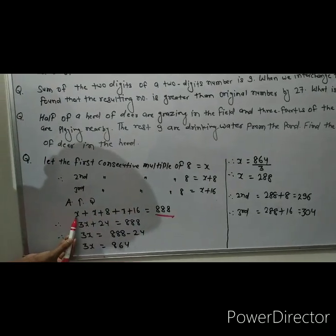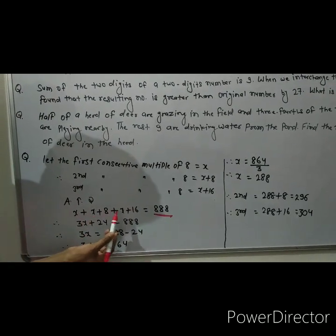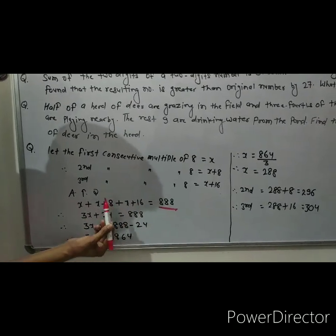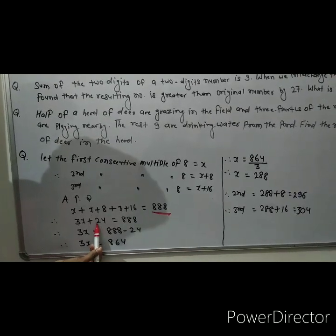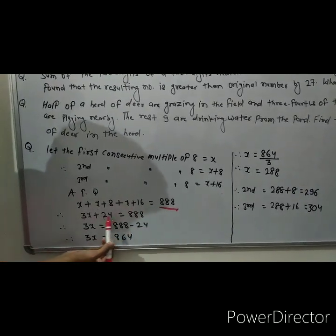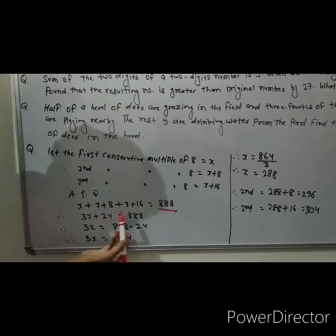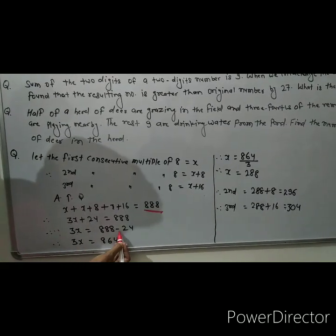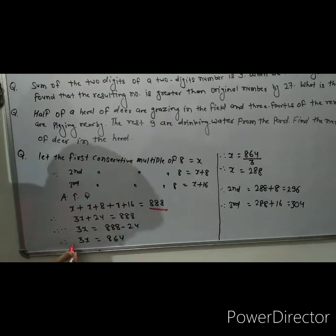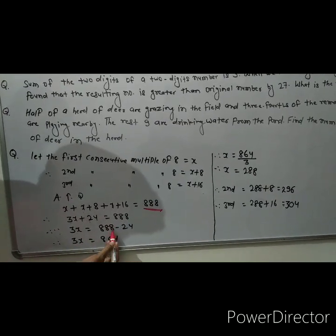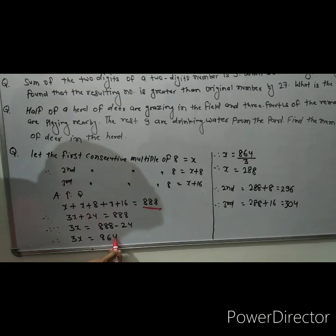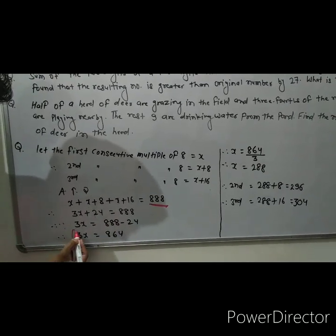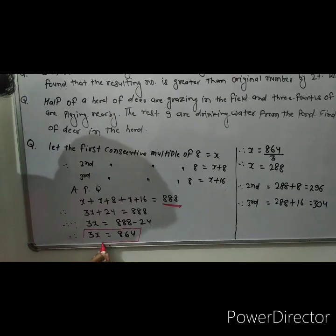Now look here: x plus x plus x is equal to 3x, and 16 plus 8 is equal to 24. When we move 24 to the right hand side it becomes negative. So therefore we can write 3x is equal to 888 minus 24, which gives 3x is equal to 864.